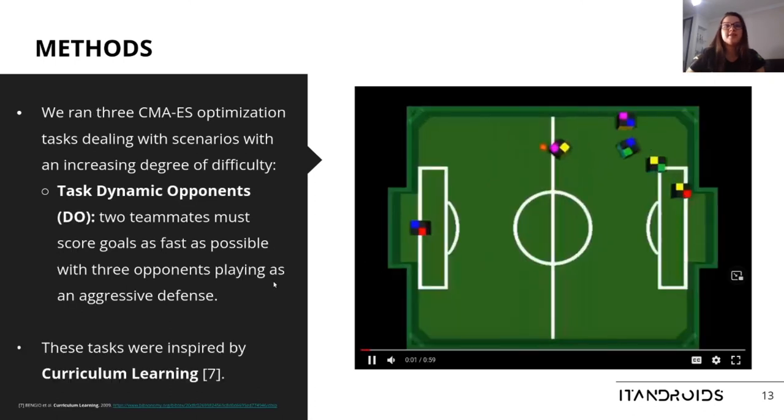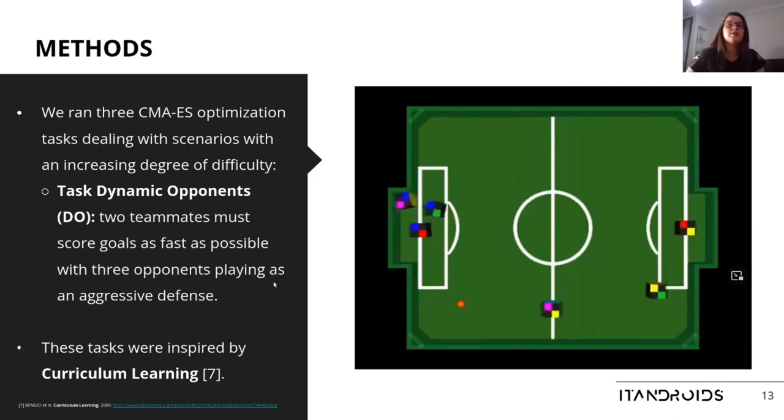The third task was the dynamic opponents, in which two teammates must score goals as fast as possible with three opponents playing as an aggressive defense. These tasks were inspired by curriculum learning, a machine learning methodology in which you start the learning process by training the model with easy examples and then gradually increase the task difficulty.